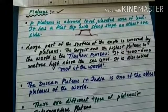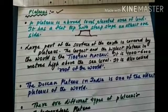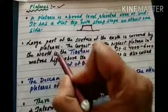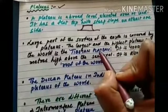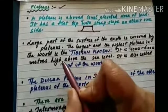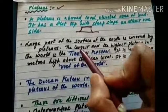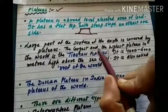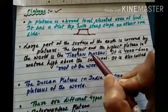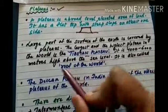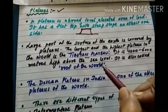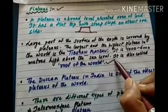Large parts of the surface of the earth are covered by plateaus. The largest and highest plateau in the world is the Tibetan plateau. It is 4000 to 6000 meters high above the sea level, and that is why it is also called the roof of the world.